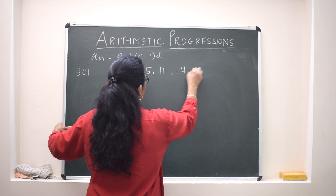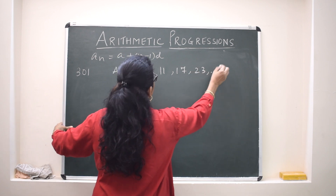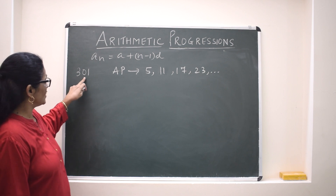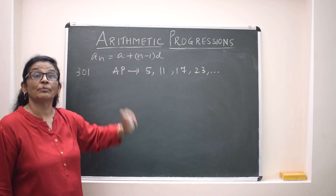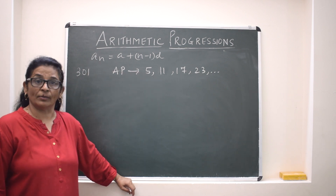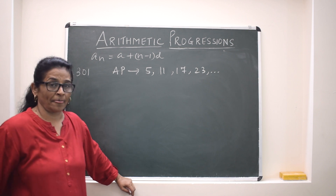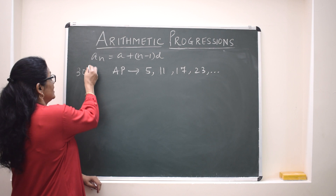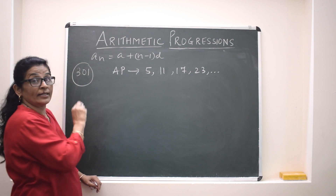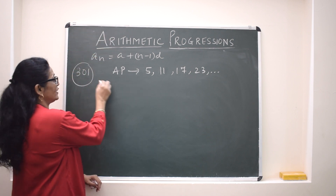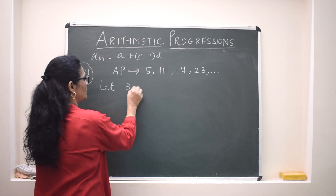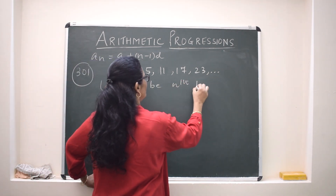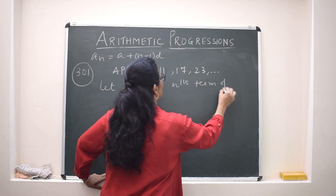We check whether 301 falls in the AP 5, 11, 17, 23... Our assumption is: suppose it does fall in the AP. Then let 301 be the nth term of this given AP. In place of AN we write 301. We know A and we can calculate D.